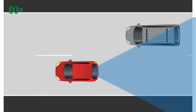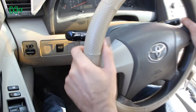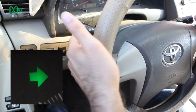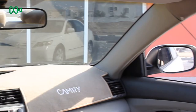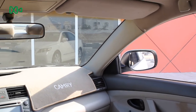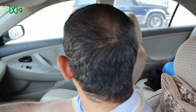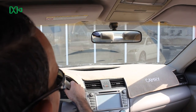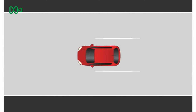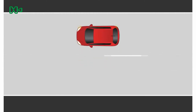Steps for overtaking to the right: first, give a signal to the right; second, look at the internal mirror; third, look at the right side mirror; fourth, look above the right shoulder; fifth, look at the internal mirror again; sixth, we pass if it's safe to do so. Note that the car must not move before completing all previous checks.